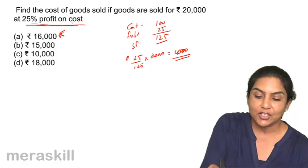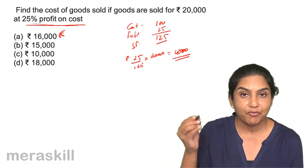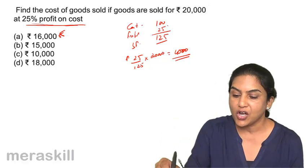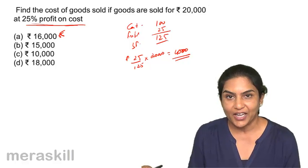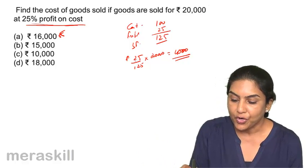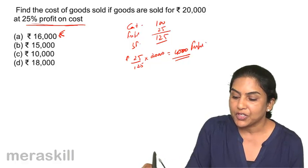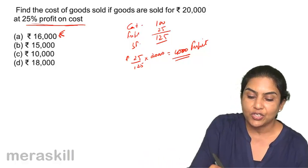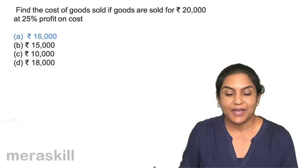Whenever they say it's on cost, let that be 100. If they say it's 20% profit on sales, let sales be 100. So here cost is 100, profit is 25, therefore selling price is 125. Sales is given to us, so 25 by 125 into 20,000 is the profit. If 4,000 is the profit, the cost of the goods should be 16,000. Correct answer should be A, 16,000.